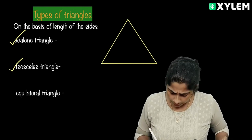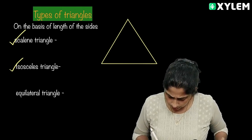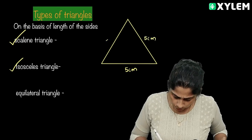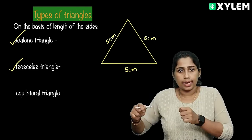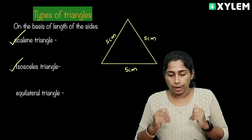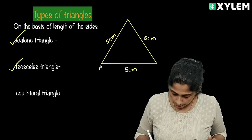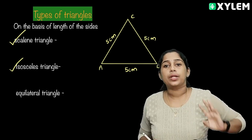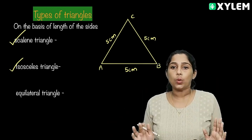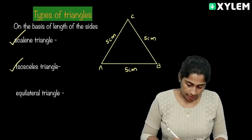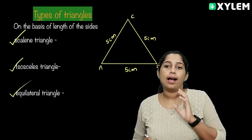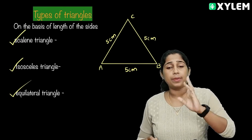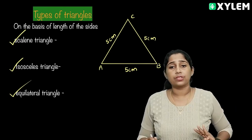Now for the third triangle, I am going to measure it. This side is 5cm, this is 5cm, this is 5cm — all three sides equal. So we can call it an Equilateral Triangle.